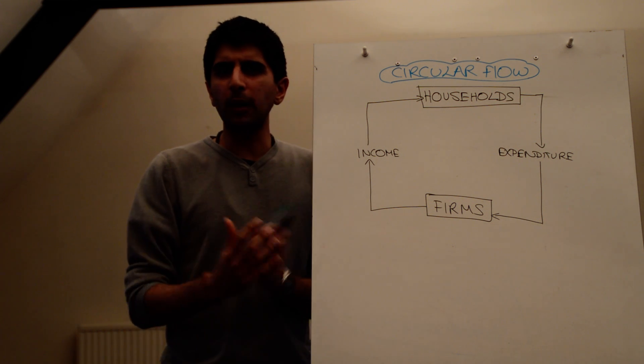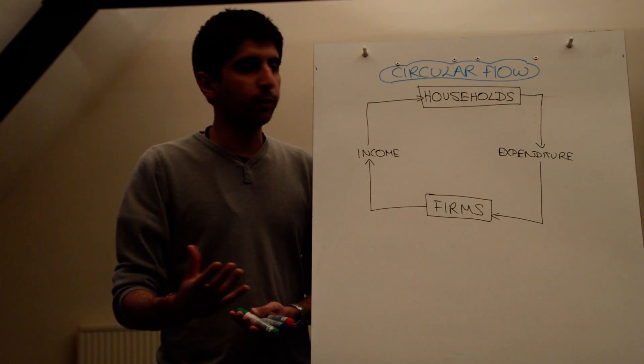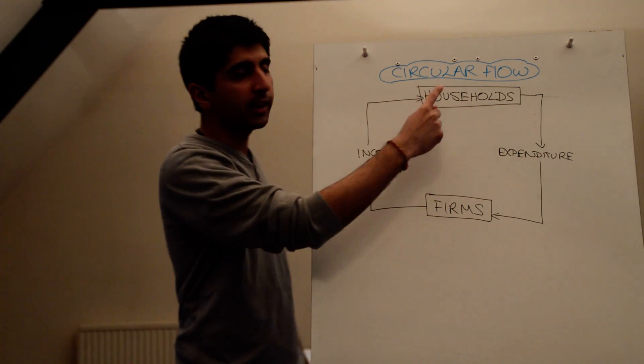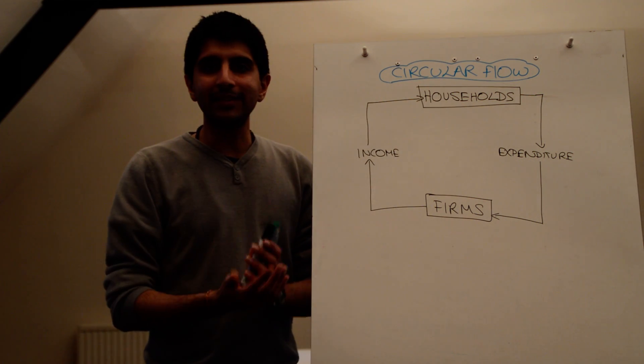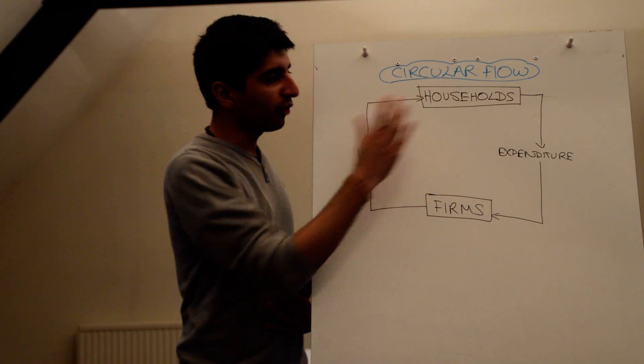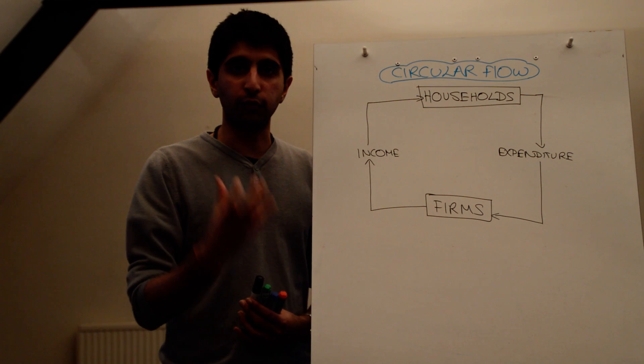Before we look at that though, we need to understand what the economy is. How can we decide whether an economy is growing if we actually know what the economy is in the first place? The circular flow of income helps us get an understanding of the economy, it models the economy for us, and from this model we can gain three different types of measurement of growth.